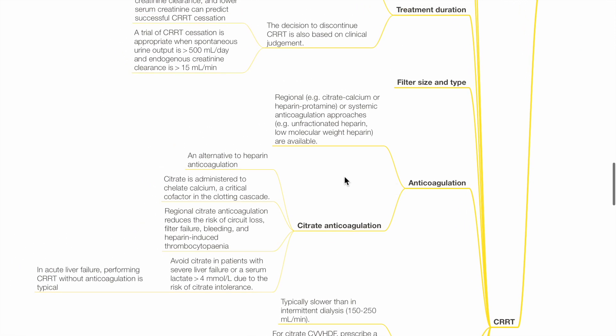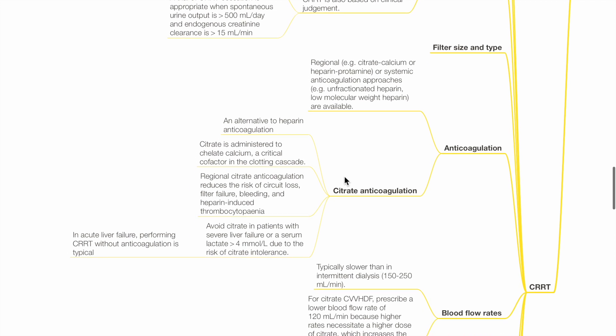Filter size and type should be specified. Regional or systemic anticoagulation approaches are available. Citrate anticoagulation is an alternative to heparin. Citrate is administered to chelate calcium, a critical cofactor in the clotting cascade. Regional citrate anticoagulation reduces the risk of circuit loss, filter failure, bleeding and heparin-induced thrombocytopenia.